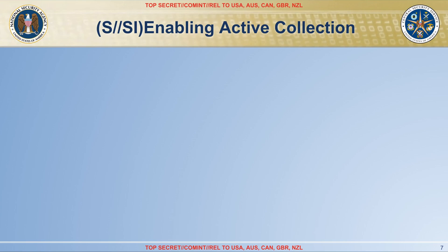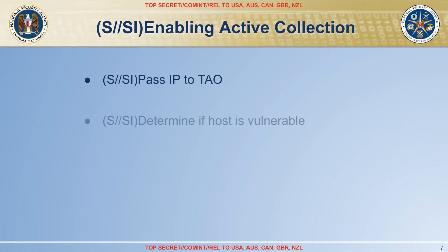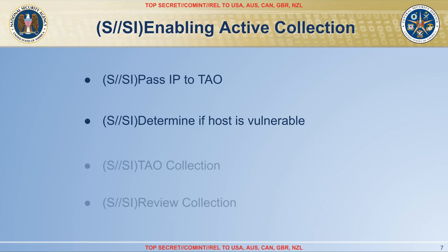But as a spy agency, they didn't stop there — they moved to the offense by enabling active collection. In NSA lingo, passive means you just monitor network traffic and search existing classified databases, while active means you are exploiting and hacking into a target. They gave the IP addresses discovered to the NSA's hackers, known back then as the Tailored Access Operations office. TAO determined if they could hack into those systems, and after hacking them, they started siphoning data back to the SIGINT analysts who were reviewing the collected information and producing intelligence products.